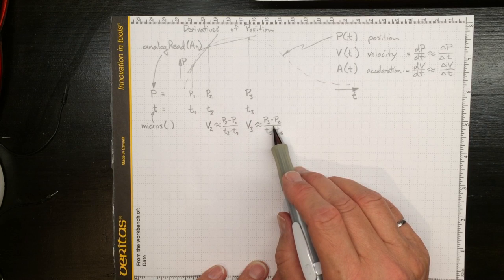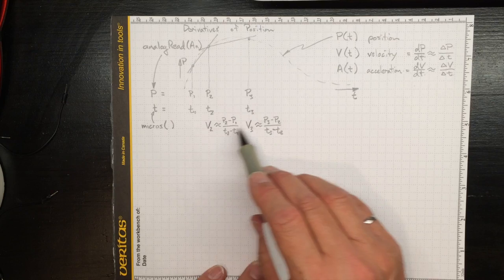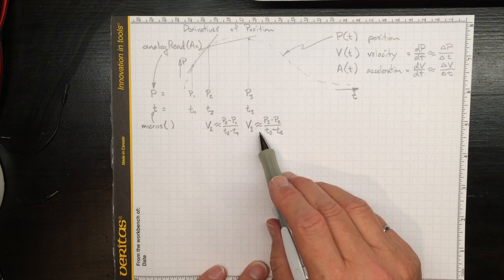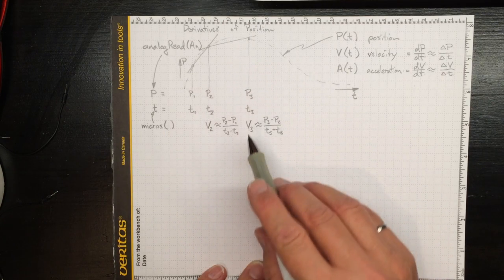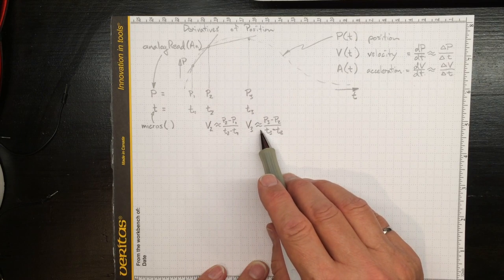Now if you take a numerical methods course like Math 272, you can do way more sophisticated differencing to get a better estimate, but these are pretty good estimates.